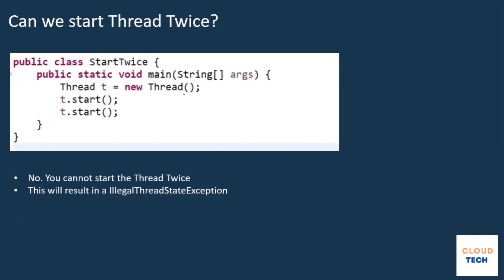The next question is: can we start a thread twice? Generally this question is not asked in a straightforward manner — they give you a program and call thread.start() twice. They create a thread, Thread t = new Thread(), start t.start(), and then try to start the already-started thread again. This is not possible in Java. It gives you an IllegalThreadStateException. You cannot start a thread twice.